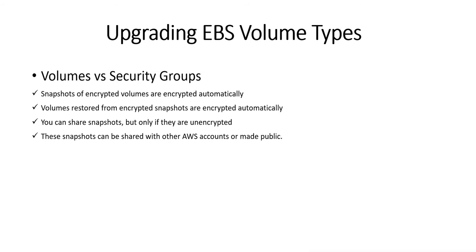Snapshots of encrypted volumes are encrypted automatically. Volumes restored from encrypted snapshots are also encrypted automatically. You can share snapshots only if they are unencrypted — and those unencrypted snapshots can be shared with other AWS accounts or made public. That's all about EBS volume types and how to upgrade them. If you have any questions, please comment and I will try to help resolve your queries. Thank you.